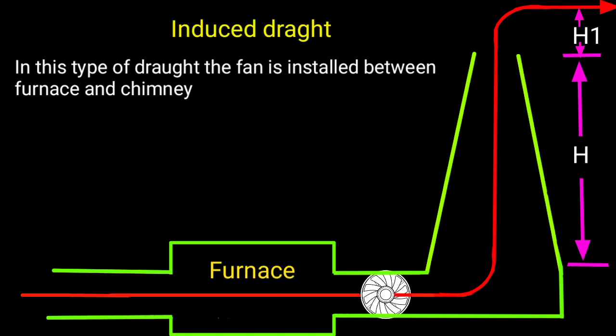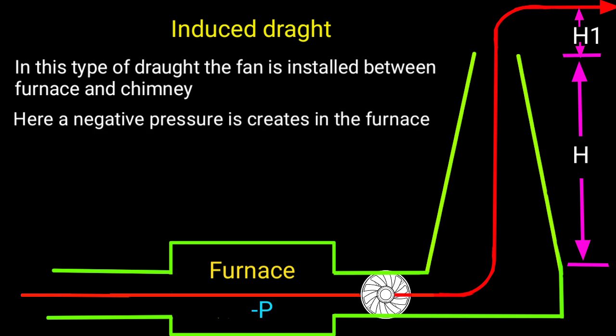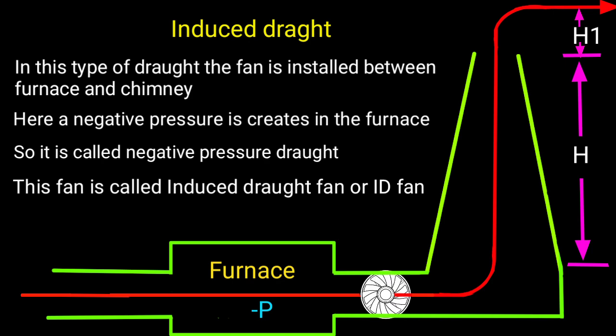Induced draught. In this type of draught, the fan is installed between furnace and chimney. Here, a negative pressure is created in the furnace, so it is called negative pressure draught. This fan is called induced draught fan or ID fan.